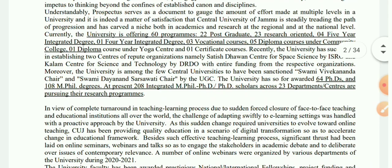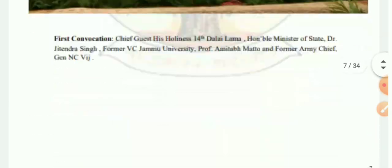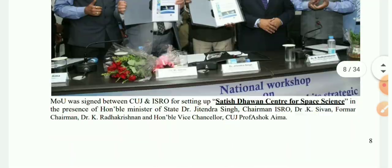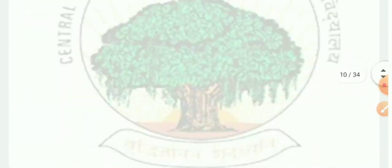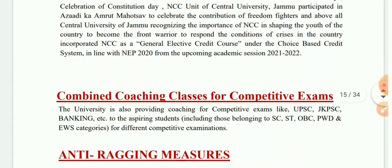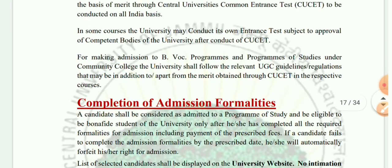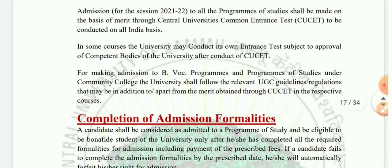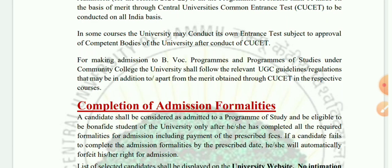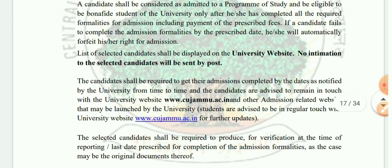Here you can see all details about the university. You can see your academic fee in this prospectus. Admission details are given here — general admission through CUCT for making admission. The complete admission formality is given here in the prospectus.